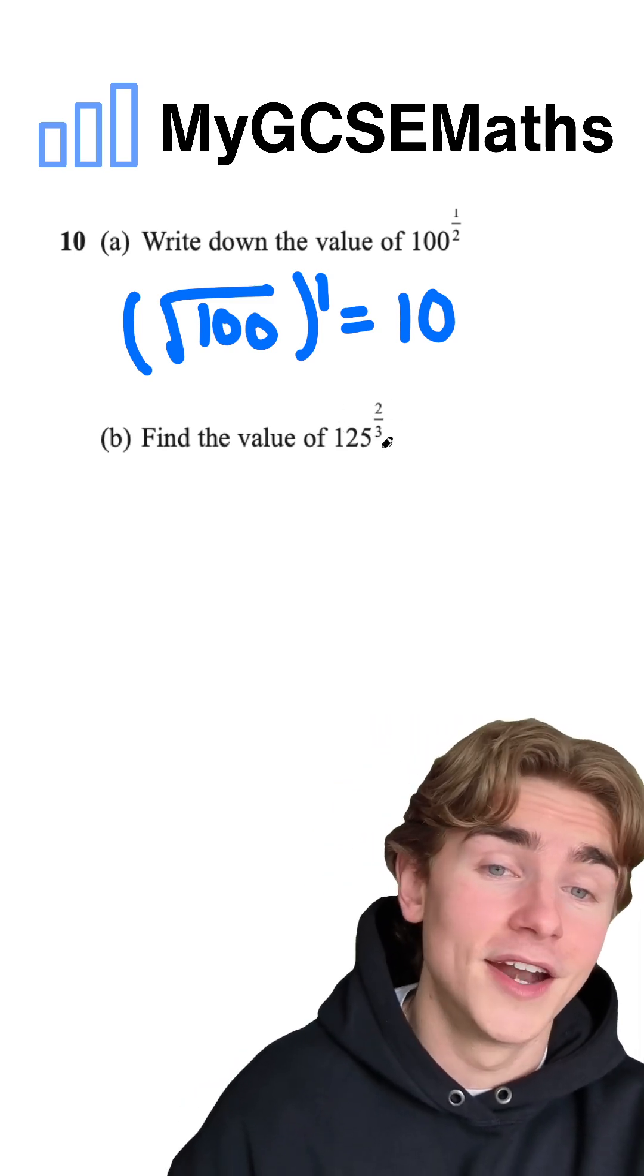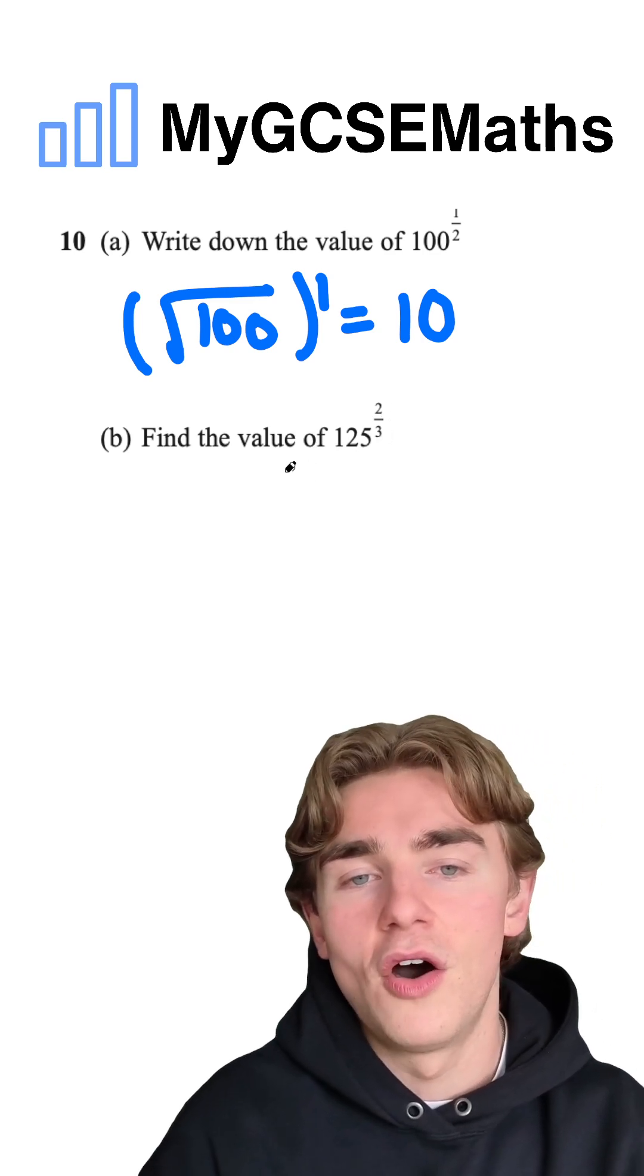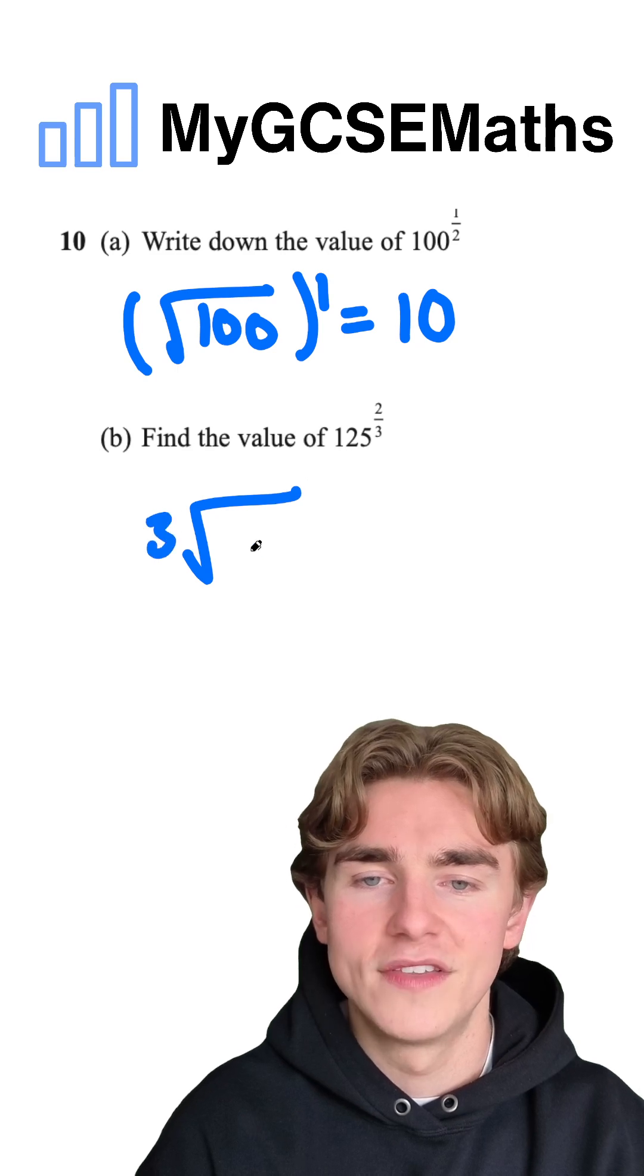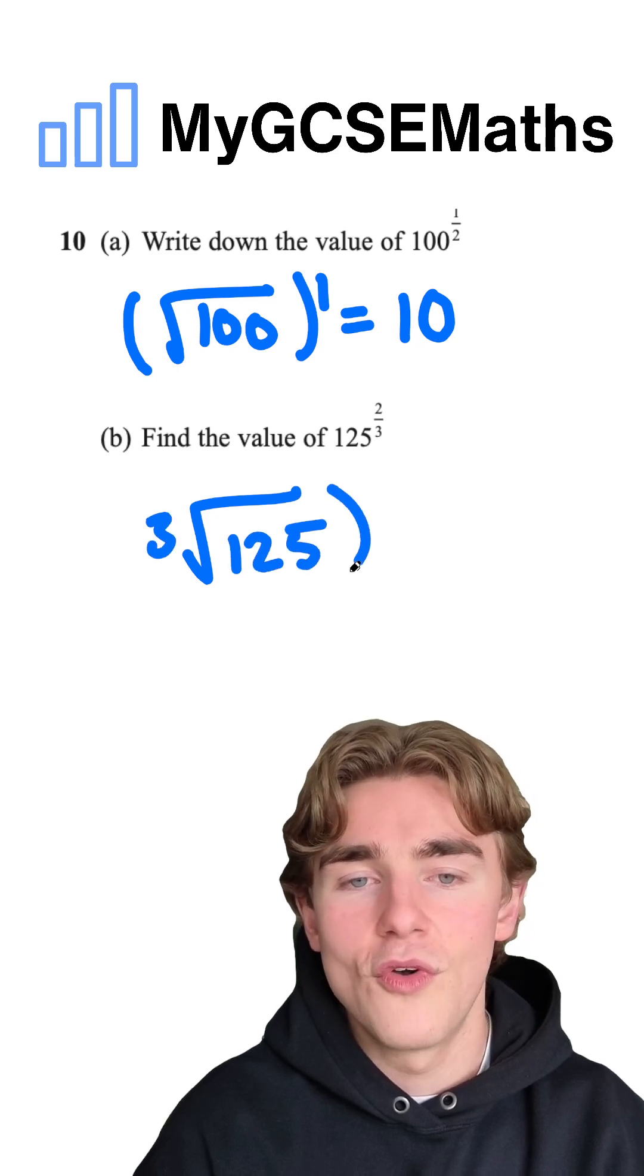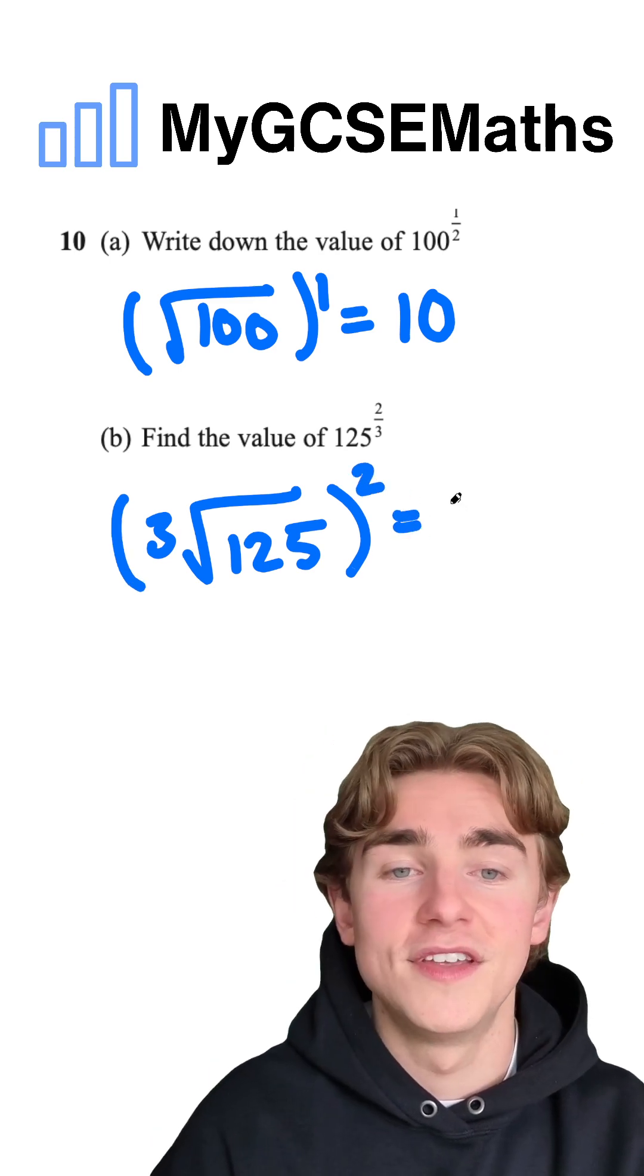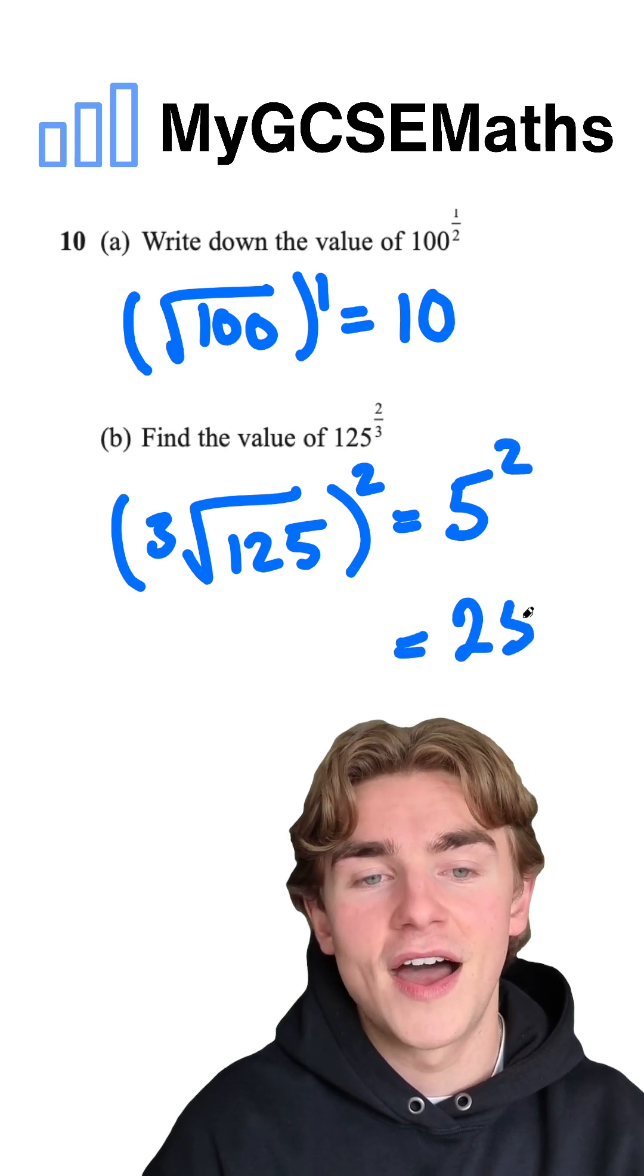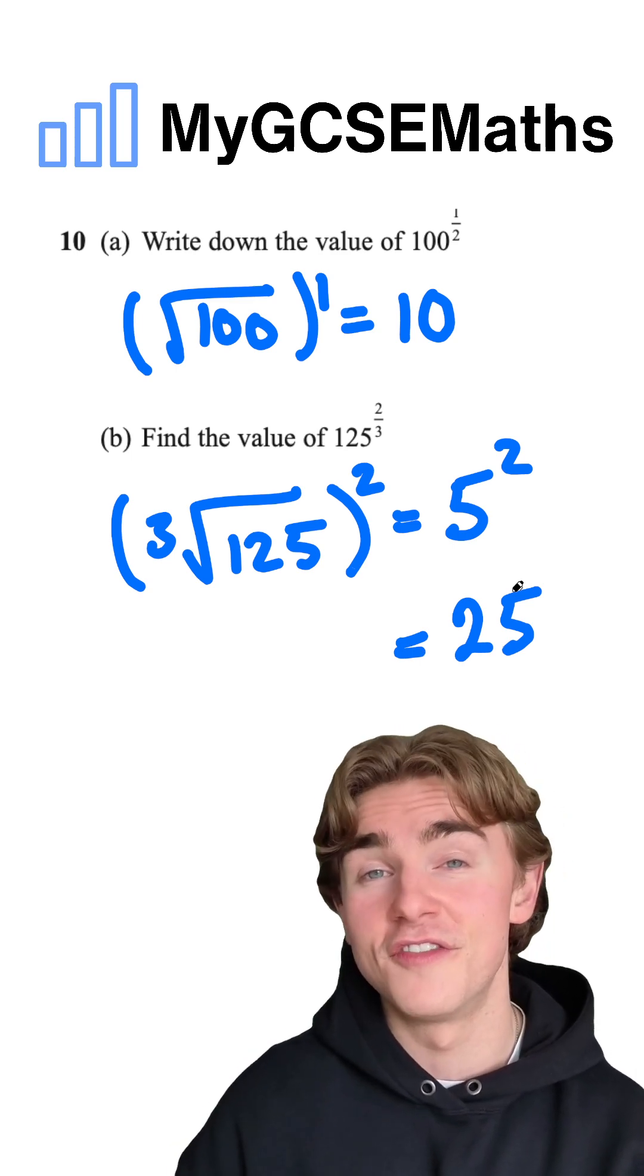Now find the value of 125 to the power of two over three. This time we have a two on the top, so after we do the cubed root of 125, we raise to the power of two. The cubed root of 125 is 5, so we have 5 squared, which is 25. So our answer to part B is 25.